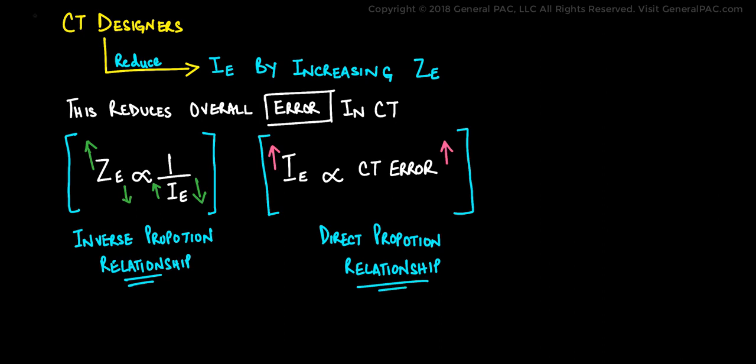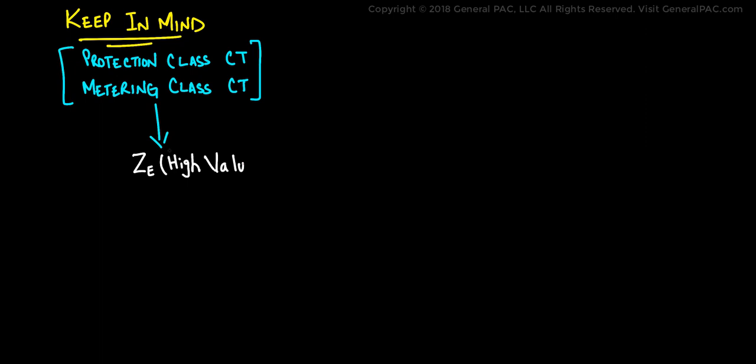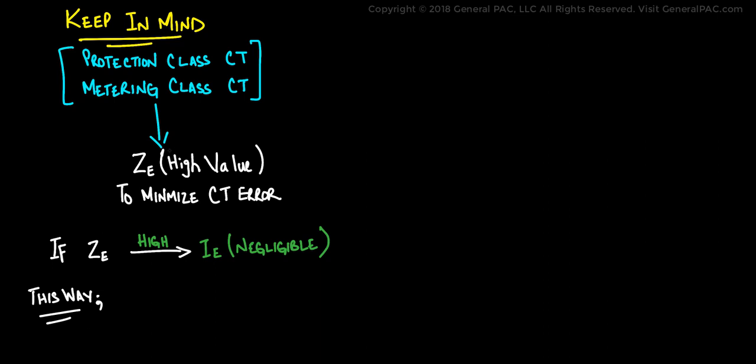So keep in mind that the protection class and metering class current transformer should be designed so that ZE is a high value. That is required to minimize the total amount of CT error. And if the value of ZE is high, the excitation current flowing through the magnetization branch will be negligible. It will be very small and we won't really see that much error or that much saturation in a CT. This way the excitation current will be low and so will the CT error produced by the current transformer.